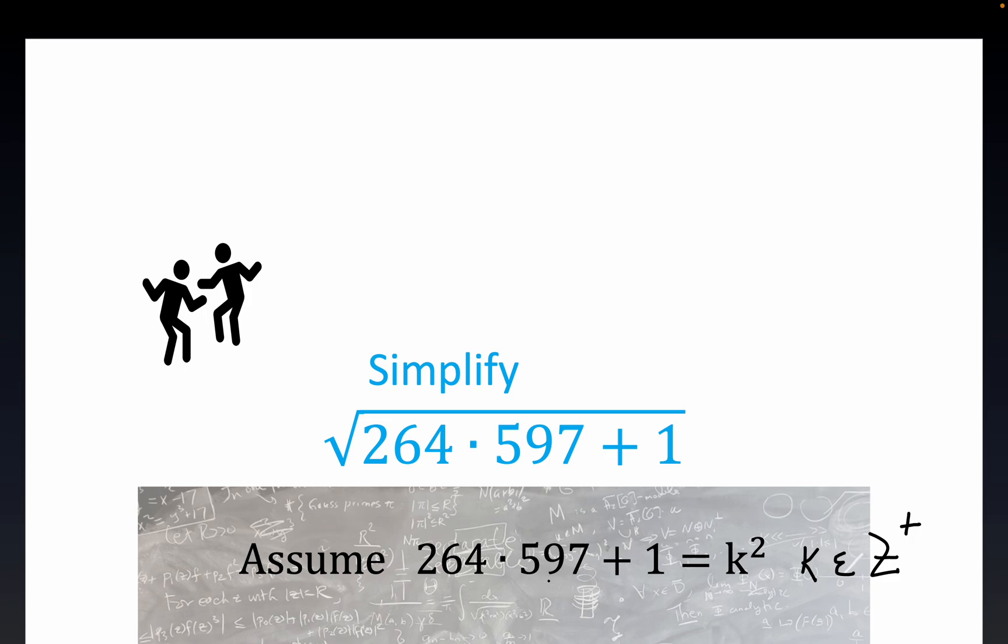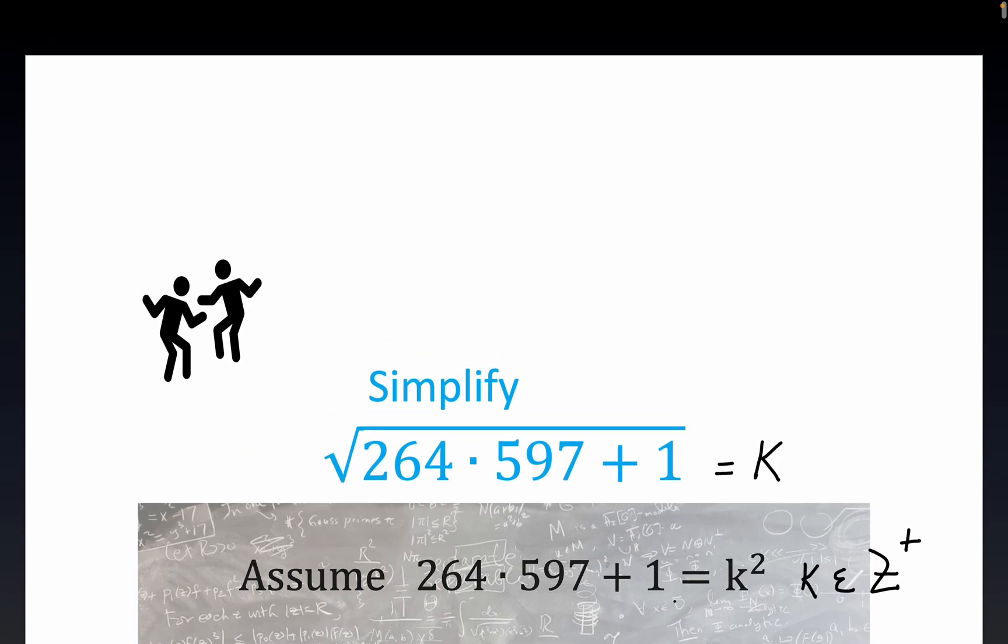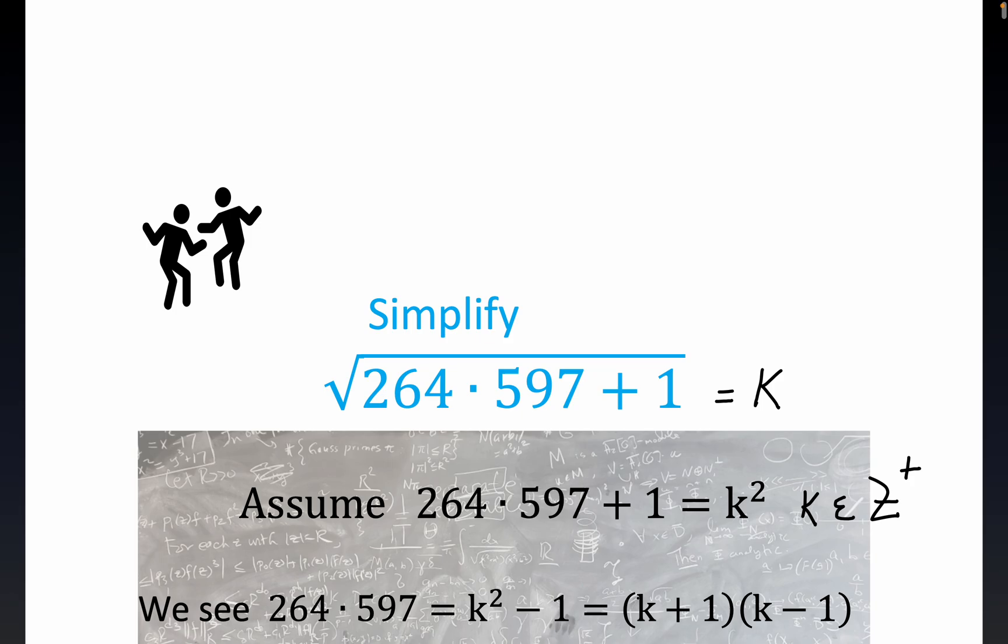So we're going to assume the radicand is equal to k squared, so if we can find such a k, the answer will be k. Now again, I hope the logic makes sense. It looks like we're sort of self-defeating to assume what you want to be true, but if in the process of doing this we found out that we couldn't find such a k, we would know that you just had to do the old-fashioned multiply and try to reduce it in the more conventional ways if it's not a perfect square.